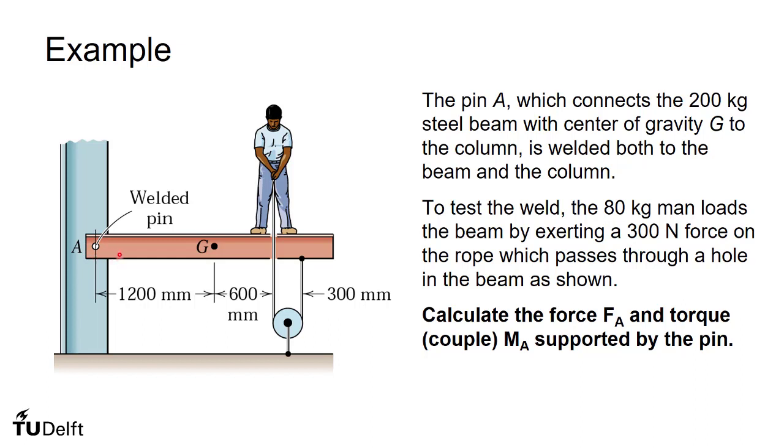On this beam, which has a mass of 200 kilograms with center of gravity position shown here, there is also a man with a mass of 80 kilograms standing on the beam and he is pulling on this rope here with a force of 300 Newtons.